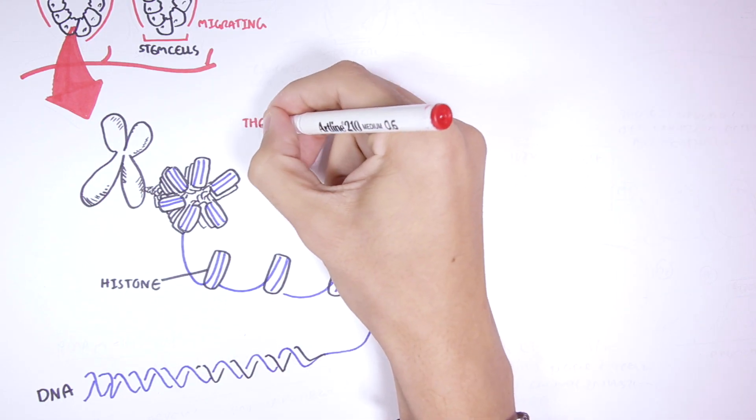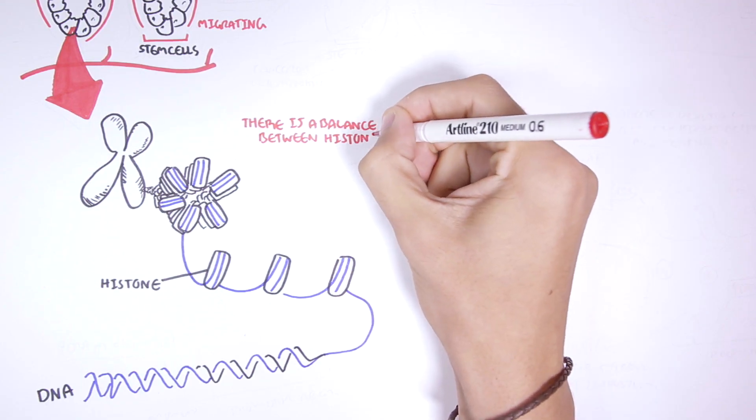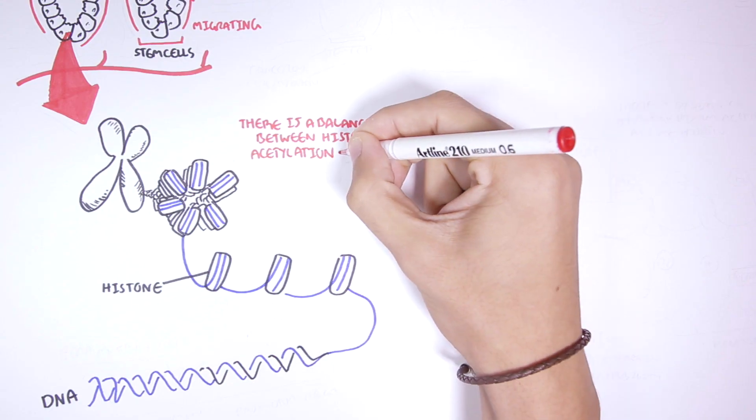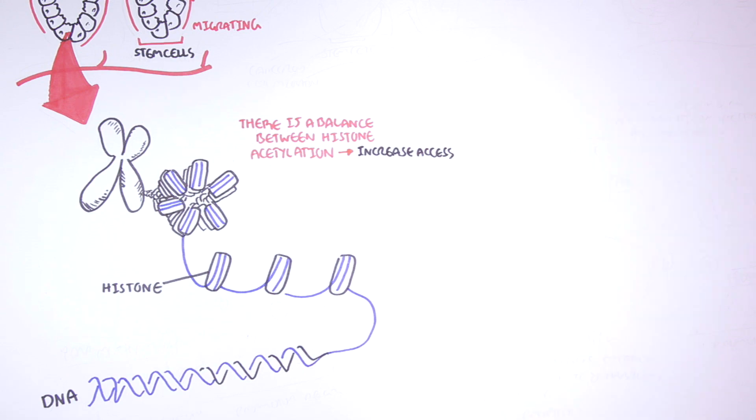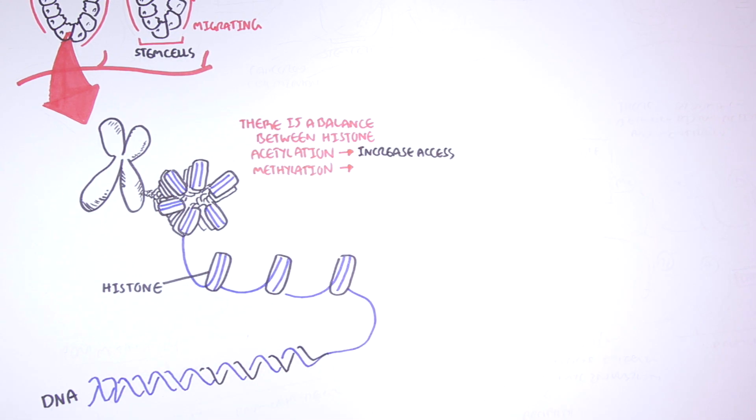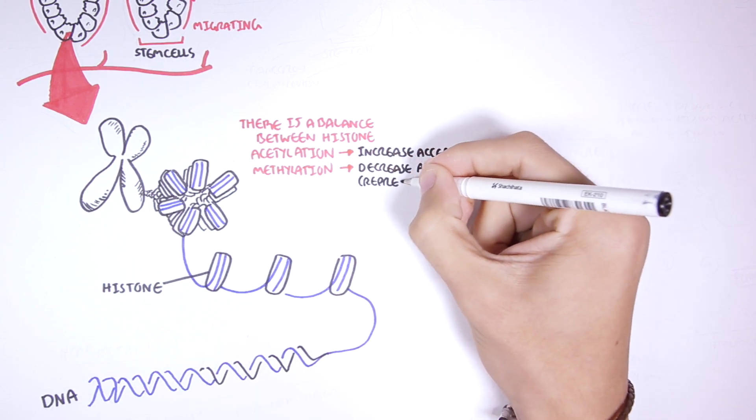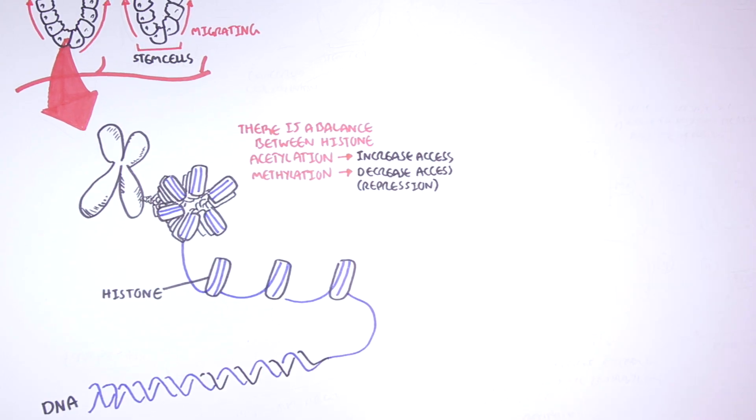In a normal colon cell there is a balance between histone acetylation and histone methylation. Histone acetylation means there is better access for transcription factors to the DNA. Histone methylation means there is decreased access for transcription factors to the DNA, so there is repression. Therefore, if there is a lot of histone methylation, certain genes may not be activated.